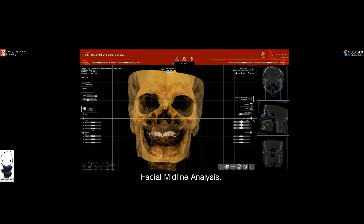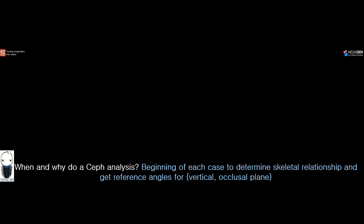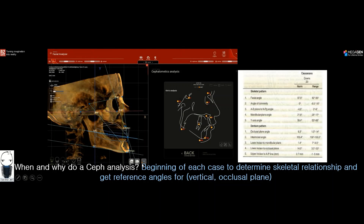Now that we have established a facial midline for the patient — the starting point of our treatment plan — what about the vertical dimension? We always set the vertical dimension in the patient's mouth, a process all clinicians are familiar with. We do our cephalometric analysis at the beginning of each case to determine the skeletal relationship and to get reference angles for vertical dimension and occlusal plane. Step number four, the facial analyzer in R2Gate digital oral design software, gives us important information about the y-axis angle and helps us establish an occlusal plane angle.